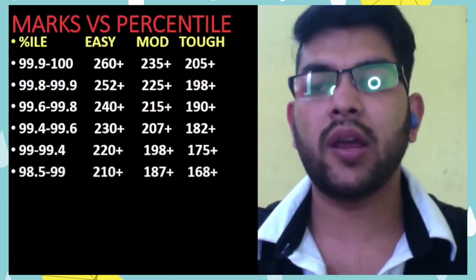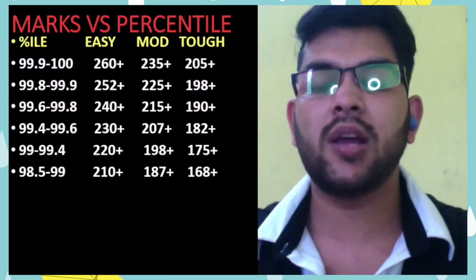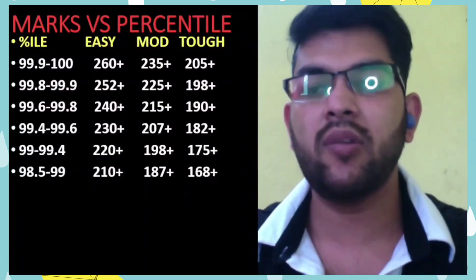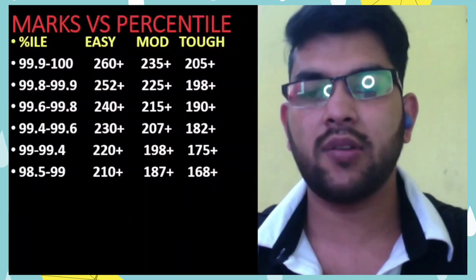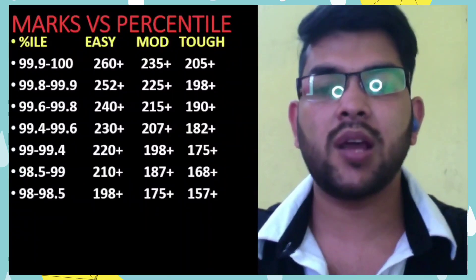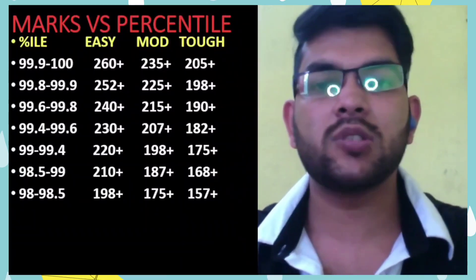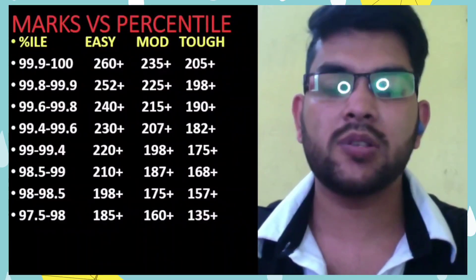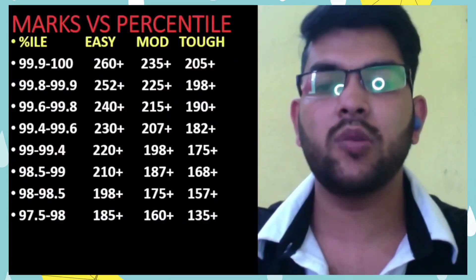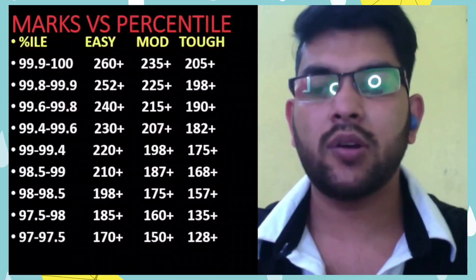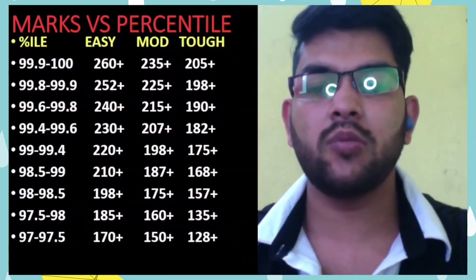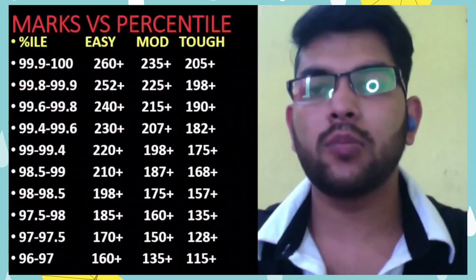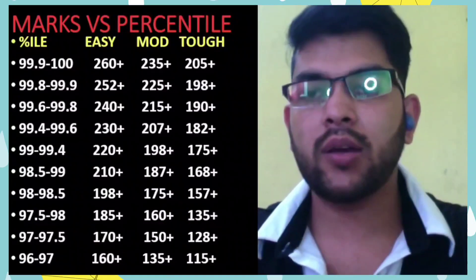For 98.5 to 99 percentile, your marks should be 187+ for moderate paper. For 98 percentile and above, marks will be at least 175. For 97.5 percentile, marks will be 160+. For 97 percentile, marks will be 150+. For 96 percentile, marks will be 135 or more.